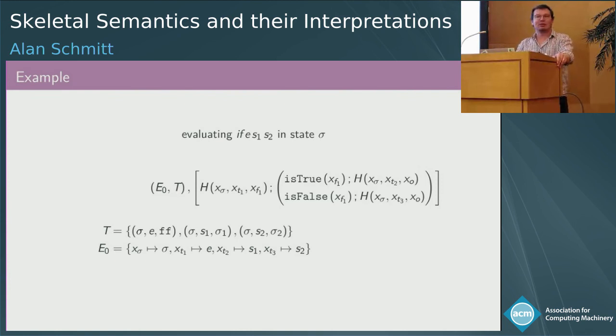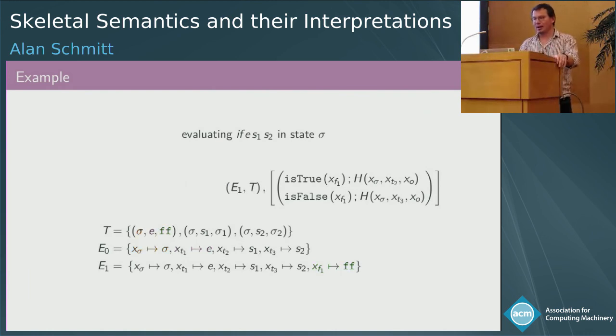We are evaluating the if construct if e is in s1 else s2. We assume that we already know how to compute e, s1, and s2 in the triple set. The initial state says that sigma is stored in name x sigma. We need to evaluate the hook. This is a recursive call. So intuitively we're going to look up in the set of triples what known computation there was for expression e in state sigma. There is one in the first triple and the result is false. So we can extend an environment associating false to the name xf1 and we can proceed.